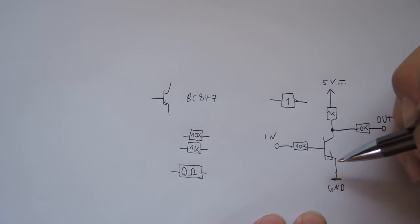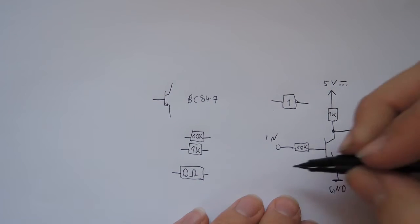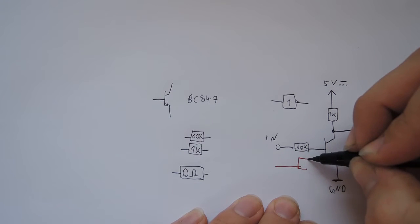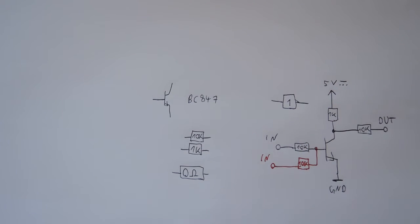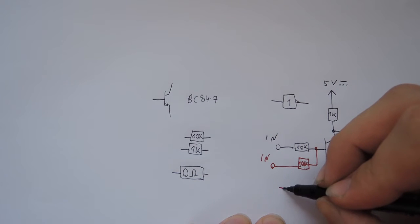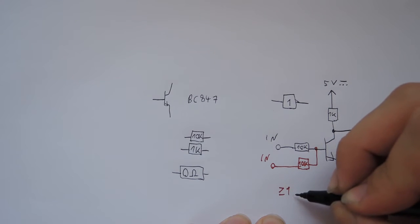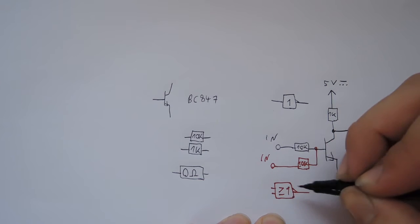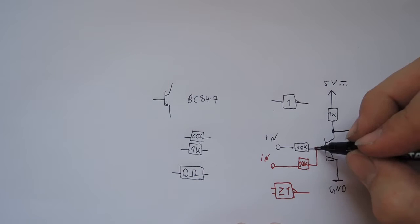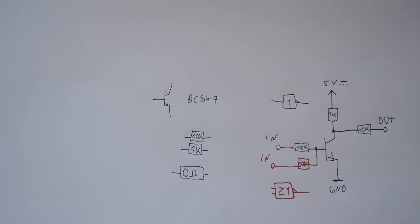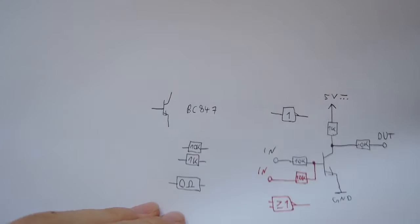And a NOR gate. The NOR gate is like that with two inputs. That's really easy. Now we have this, let's move on to the first board.